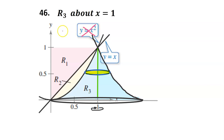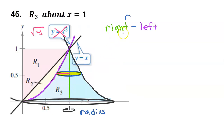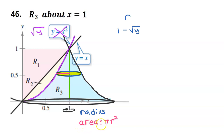Therefore, we need all functions that we use to be written in terms of y. As we saw in a previous problem, this parabola can be written as the square root of y. Finding the volume of the solid is a three-step process. Step 1 is to find an expression for the radius of a disk. For a horizontal radius, you can find an expression by subtracting the function on the right minus the function on the left. In this case, the function on the right is 1, and the function on the left is the square root of y. Step 2 is to find an expression for the area of a disk, but the area of a disk is always pi r squared.